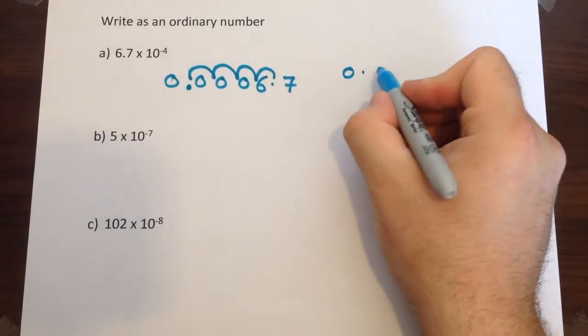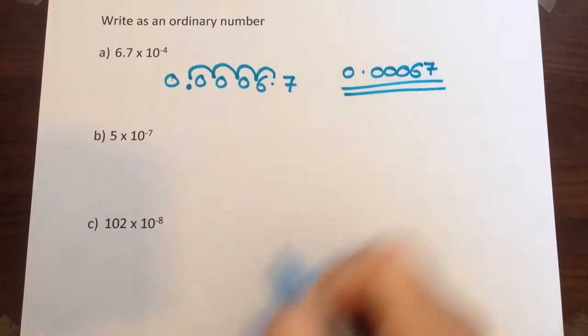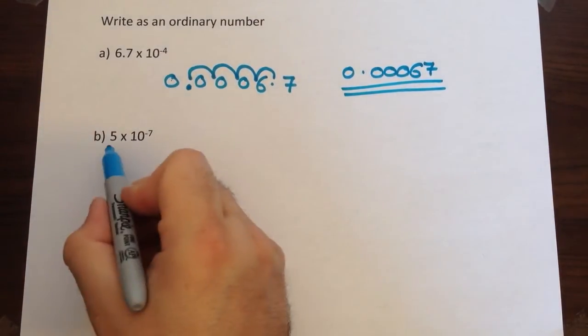Rewrite your answer. We would now have 0.00067 as our final answer. Now same again for this one.